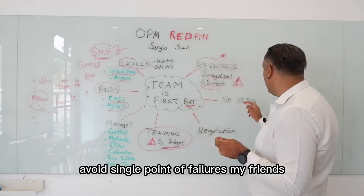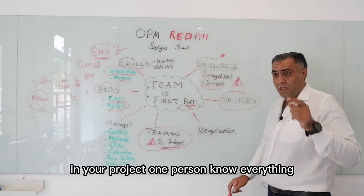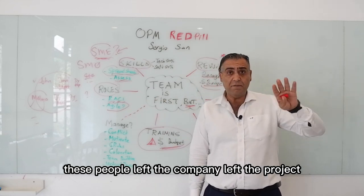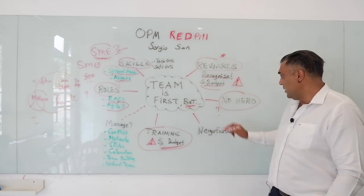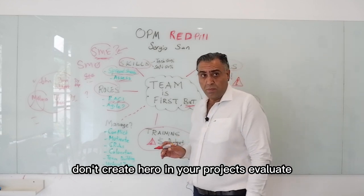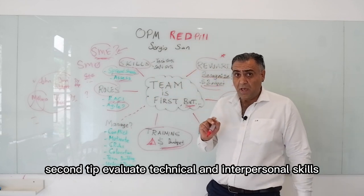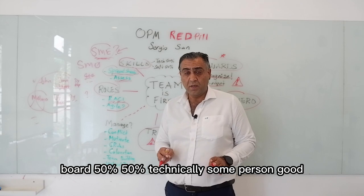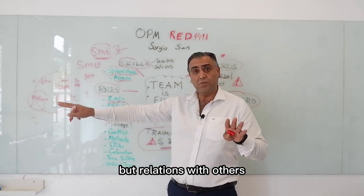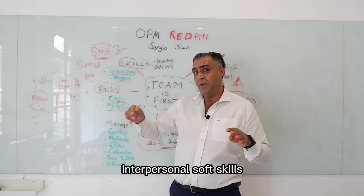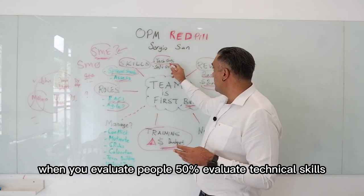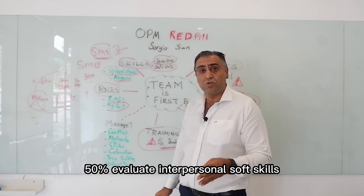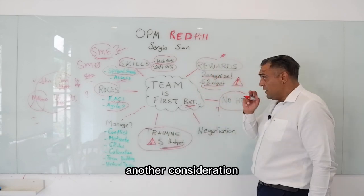Tips. Tip one: avoid single points of failure. In your project, if one person knows everything and knowledge is not transferred to others, and that person leaves the company or project — what will happen? Don't create a hero in your projects. Tip two: evaluate both technical and interpersonal skills — 50% technical, 50% interpersonal soft skills and relations with others.